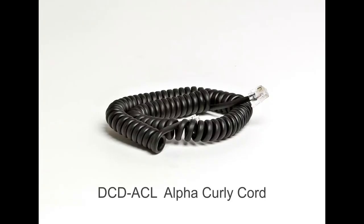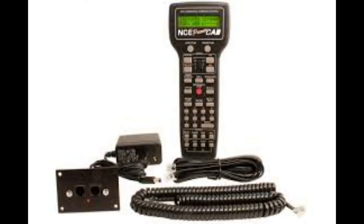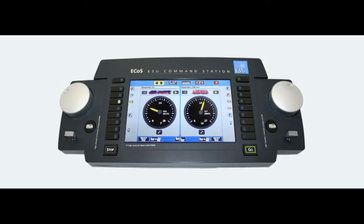The AEU sends these commands to the DCC system via a DCC Concepts six wire curly cord. Always use the DCC Concepts cord here. The other curly cords look similar but they only have four wires and so won't work.